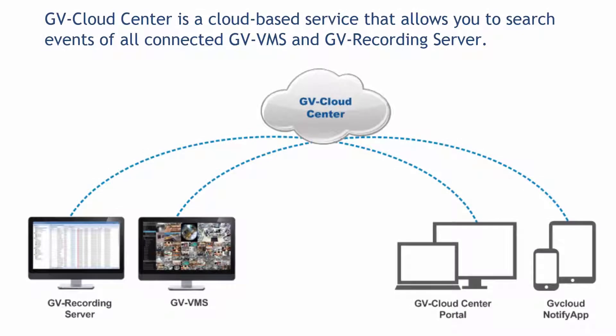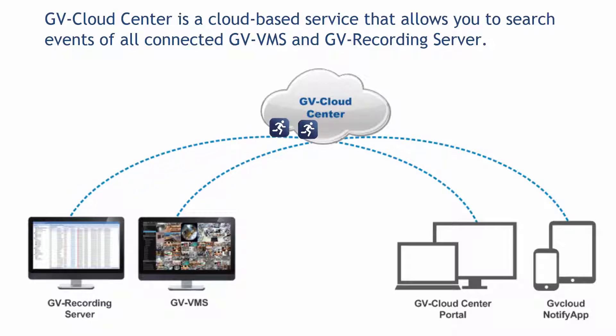GV Cloud Center is a cloud-based service that allows you to search events of all connected GV VMS and GV recording servers. When events of the connected hosts are sent to Cloud Center, you can either log on to GV Center Portal from a web browser on any PC, or use GV Cloud Notify app for event search and playback.